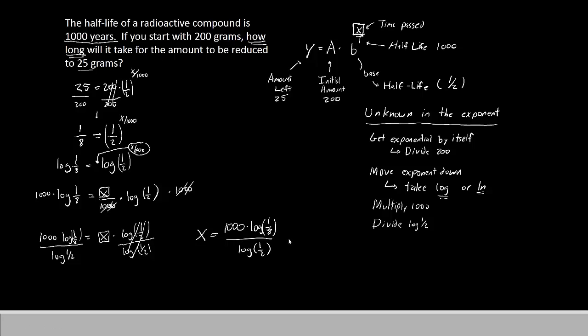Now you would enter this into a calculator to simplify it. If you do, you will end up with x equals 3,000. And that is our answer. It would take 3,000 years to start with 200 and then reduce to 25. Thank you for watching. We will see you again next episode.